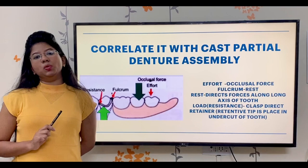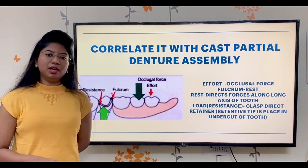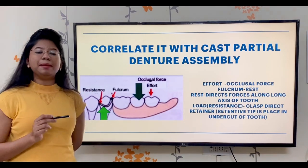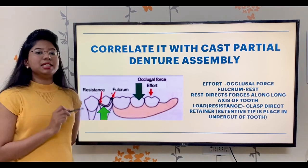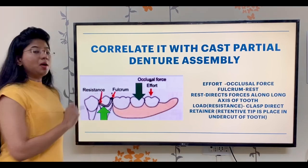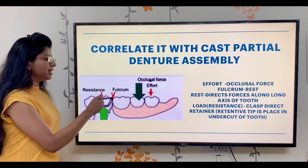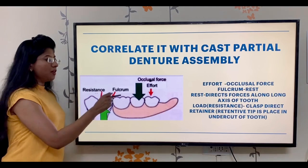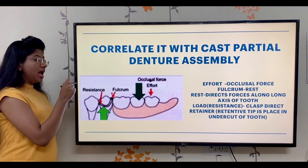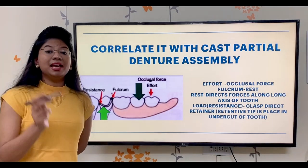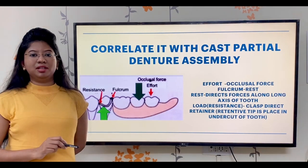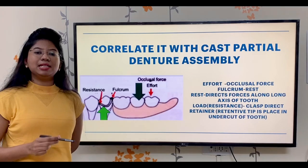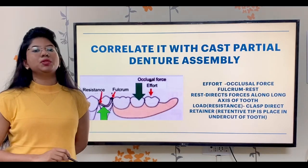So what we can do? We can convert this assembly to a second order lever, or we can place an indirect retainer. By placing an indirect retainer away from the fulcrum, we are increasing the distance between the fulcrum and the retainer. The distance of the effort to the fulcrum and the fulcrum to the indirect retainer becomes equal — again the see-saw mechanism. Now they are balancing each other, so our assembly will not pressurize this tooth and will be in a balanced condition, and will not get dislodged from its area.